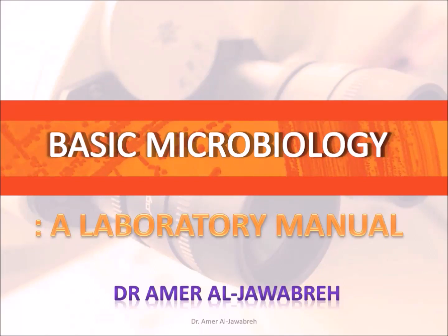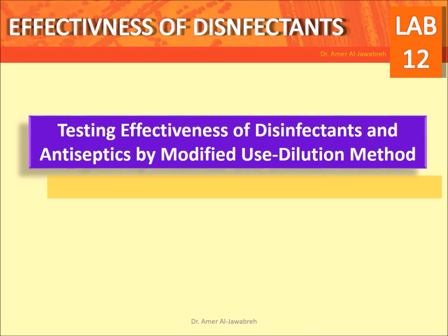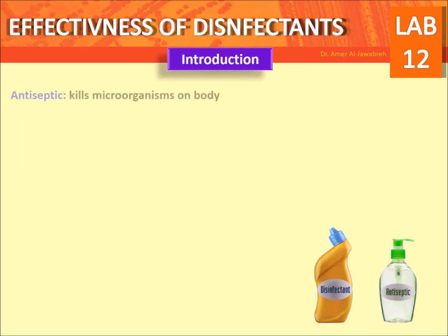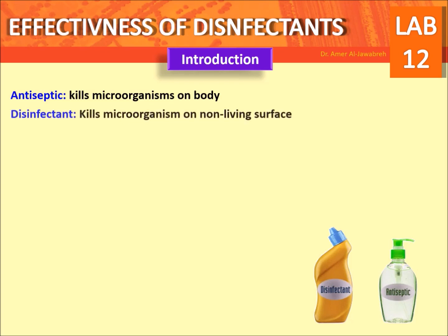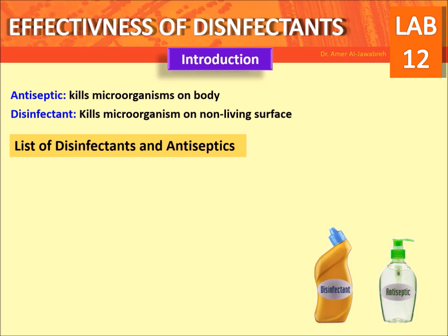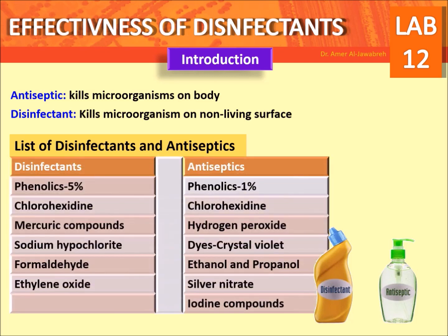Basic Microbiology: A Laboratory Manual — Testing Effectiveness of Disinfectants and Antiseptics by Modified Use Dilution Method. Introduction: an antiseptic kills microorganisms on the body, while a disinfectant kills microorganisms on non-living surfaces. Disinfectants include phenolics, 5% chlorhexidine, mercuric compounds, and sodium hypochlorite.